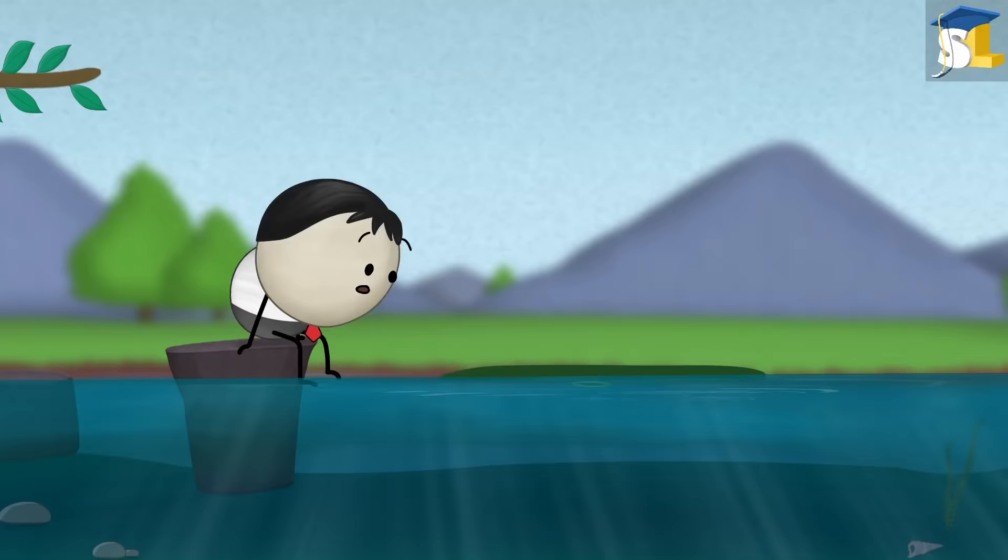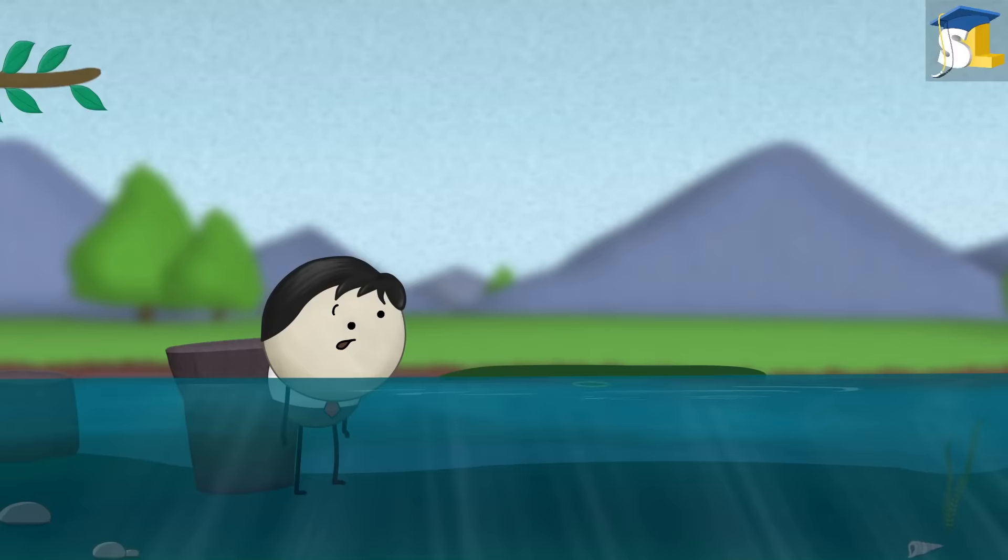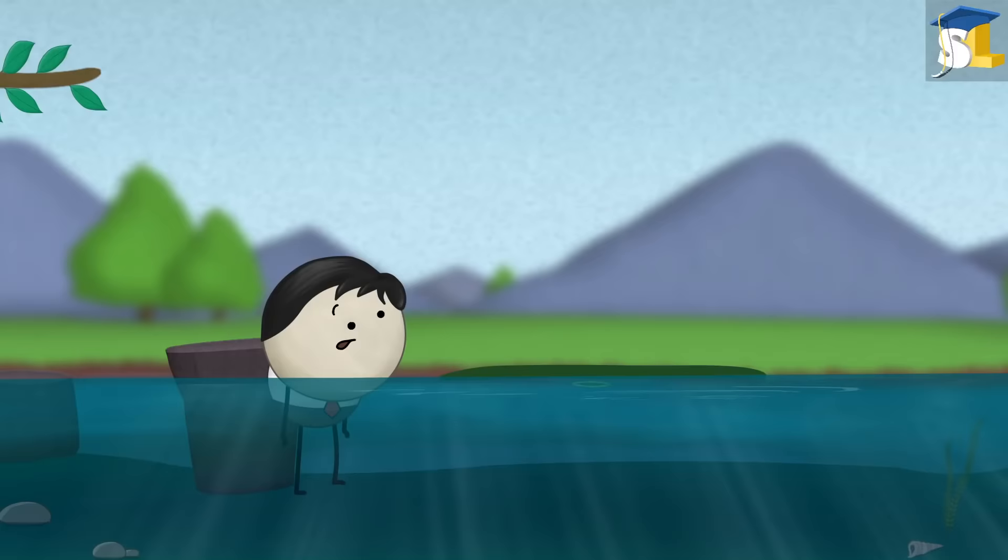If the leaves of water lilies have stomata on their lower side, then they would have been pressed against the water surface. As a result, the stomata would not be able to take in carbon dioxide from air. Thus, the leaves of water lilies have stomata on their upper side, where they easily get air and usually do not come in contact with water.